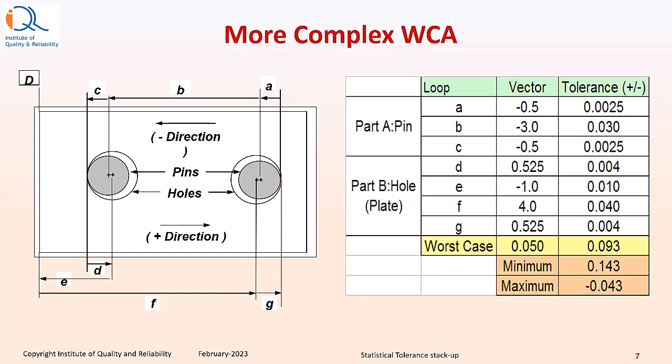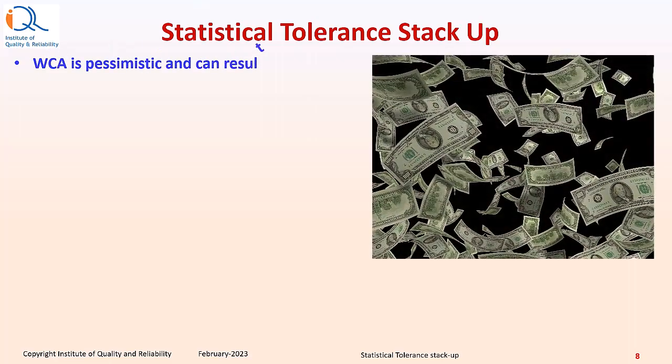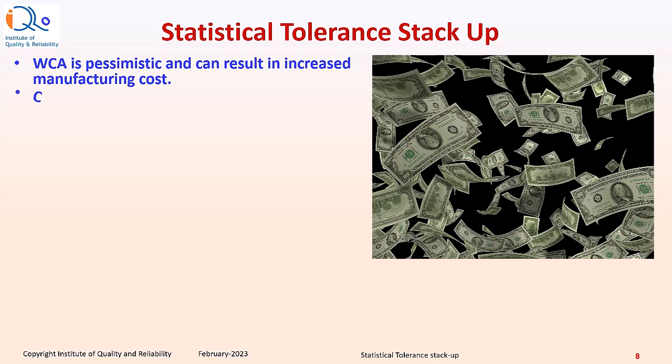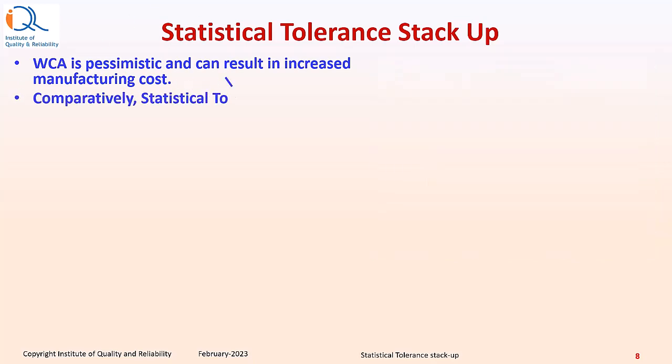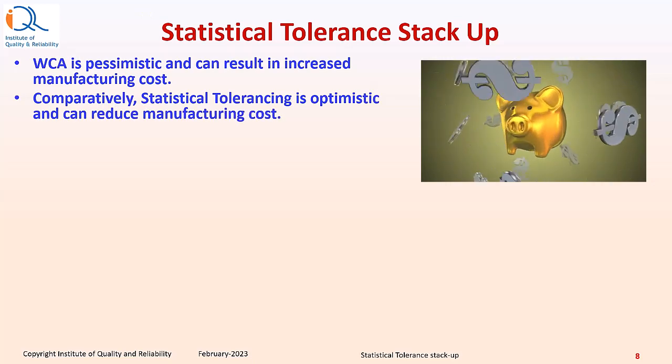We could visualize it the other way round also. Worst case analysis or WCA is pessimistic and can result in increased manufacturing cost. Comparatively statistical tolerancing is optimistic and can reduce manufacturing cost.